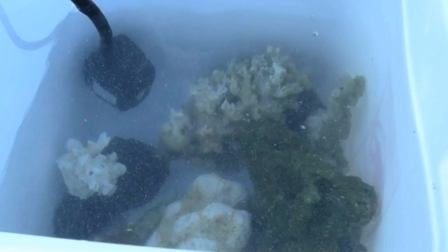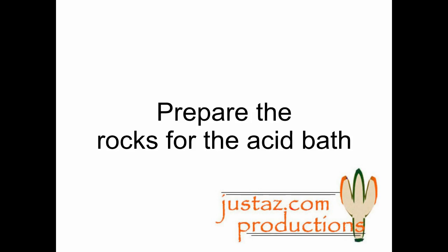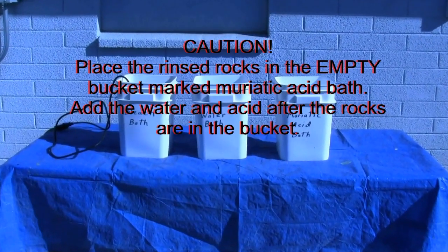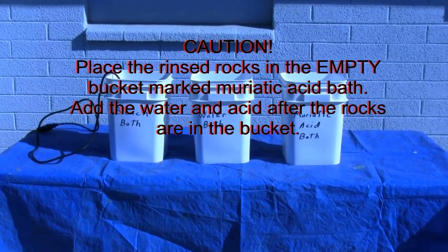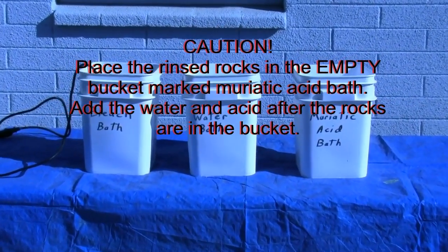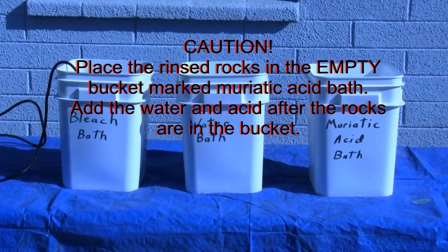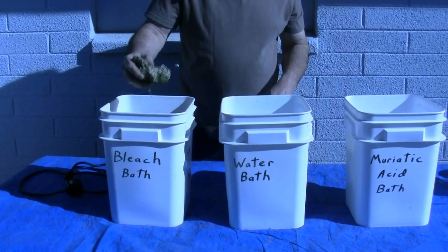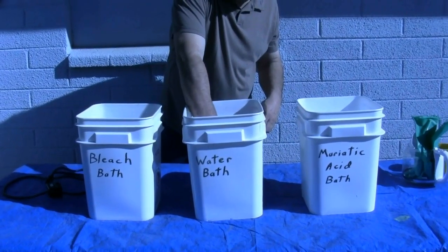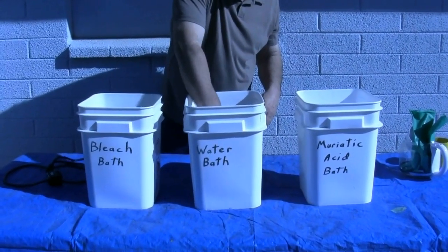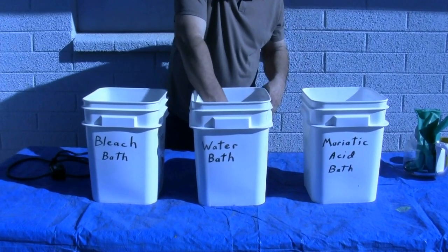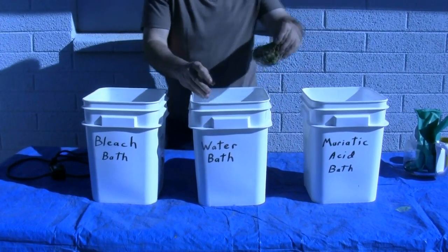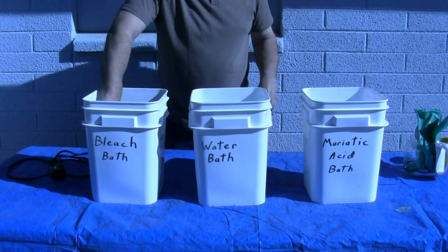Leave the rocks in the bleach bath for 24 hours. For the acid bath, you need to first rinse the bleach off the rocks and then place them in the bucket marked muriatic acid bath. Remove the pump from the bleach bath. Take the rocks from the bleach bath, rinse them in a fresh water bath, then place the rocks in the empty bucket marked for the muriatic acid bath.